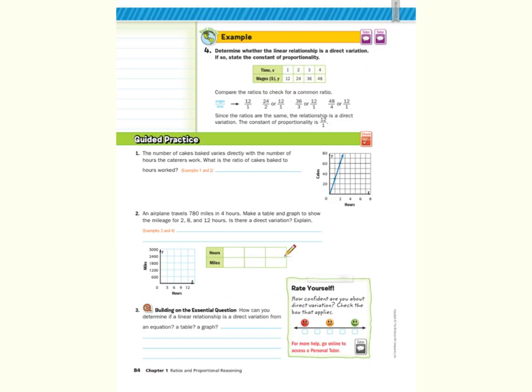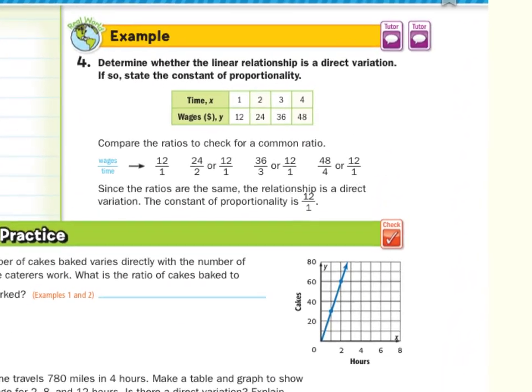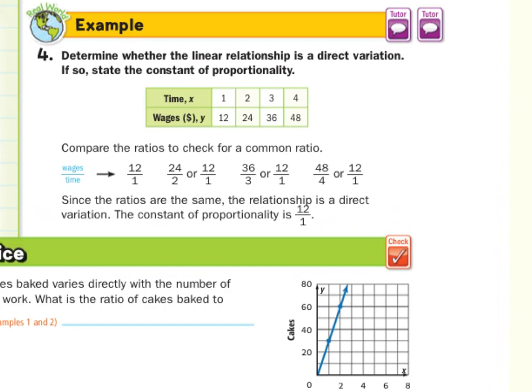Guided example 4 does not have a guided question attached. Let's be sure to pay attention here. Determine whether the linear relationship is a direct variation. If so, state the constant of proportionality. Very similar to what we did in saying our $4.20 over 1, $8.40 over 2, $12.60 over 3, and $16.80 over 4, they compared the y over x again. The 12 over 1, 24 over 2, 36 over 3, 48 over 4, and those all simplify into 12 over 1. And again, since the ratios are the same, the relationship is a direct variation, and the constant of proportionality is 12 over 1.